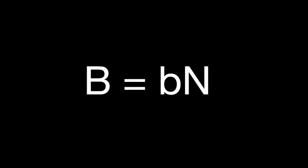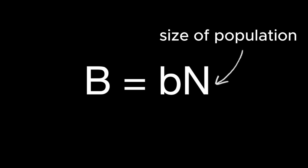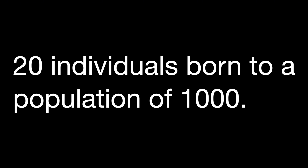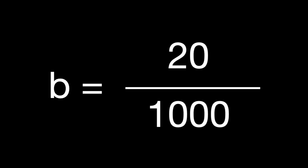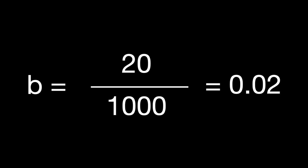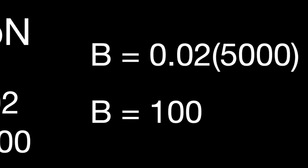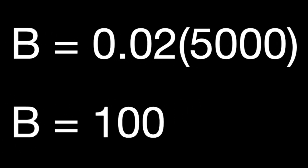Here we see how we can add that information by redefining the capital B variable to account not just for the raw numbers of births, but rather the rate of birth per capita within the population. Note that the letter B is now in its lowercase, which intuitively refers to the rate of birth rather than the actual number of individuals being born. This is the per capita birth rate, expressed as a decimal. For instance, if there were 20 individuals born to a population of 1,000, the per capita birth rate is 20 divided by 1,000, giving a birth rate of 0.02. Applying this rate to a population of 5,000 instead, the number of births would be 100 new individuals in the next generation.